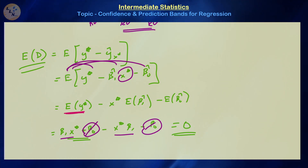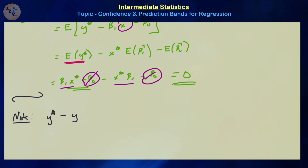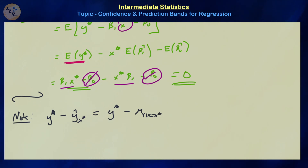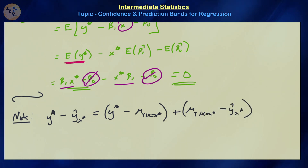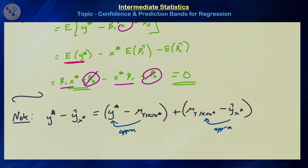We can write y* − ŷ(x*) = [y* − μ_{y|x=x*}] + [μ_{y|x=x*} − ŷ(x*)]. This shows two different errors are at play: the error from approximating y* by its mean, and the error from approximating the mean by ŷ(x*). This is why the prediction interval will be wider than the confidence interval for the mean.